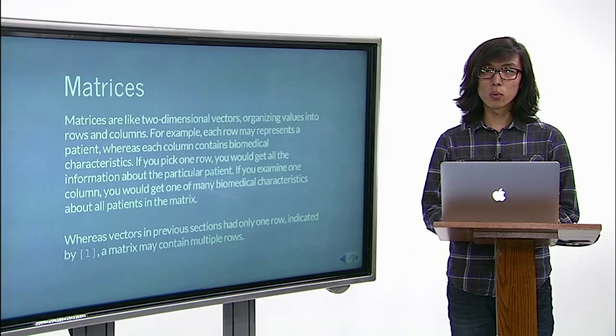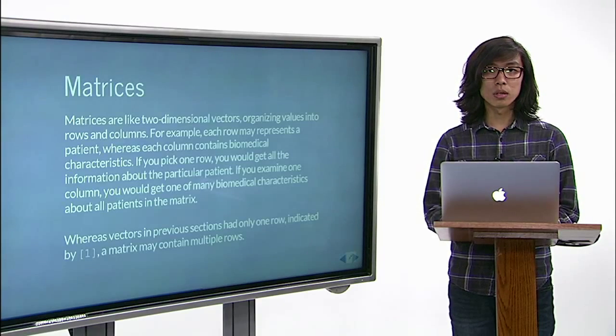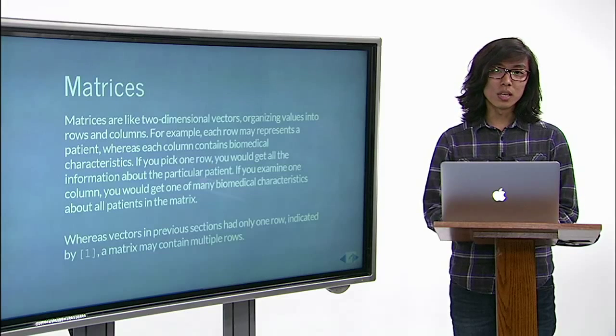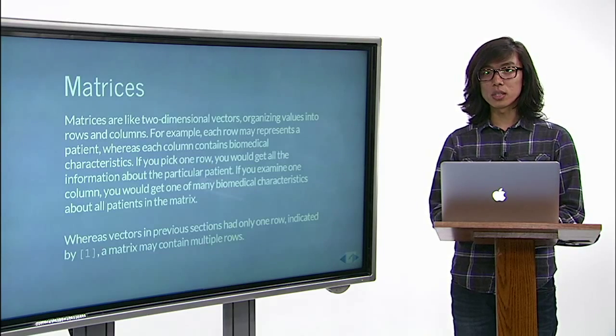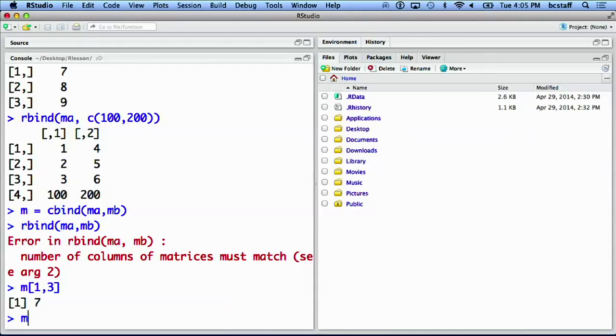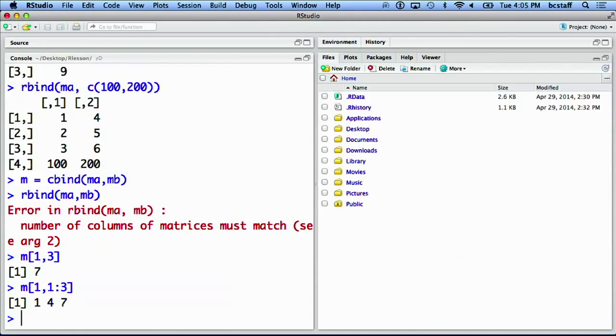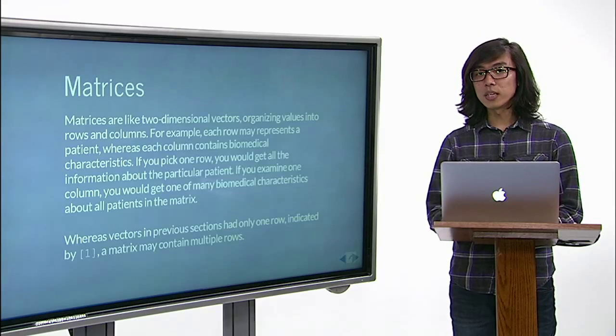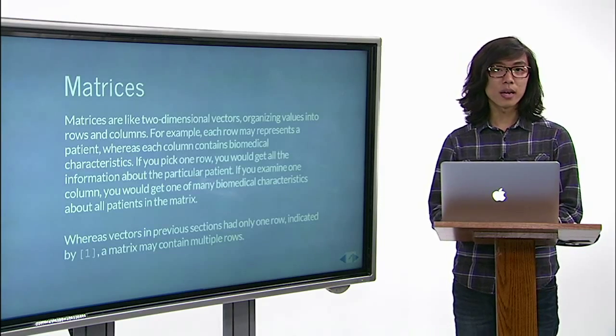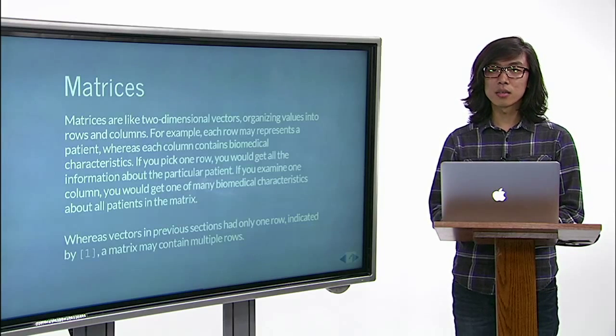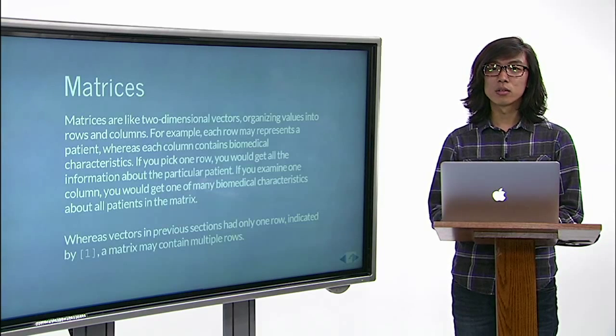We can also use a sequence of numbers generated with the colon operator within square brackets. Here, I would like to know the values in the first row. Leaving the row spot or the column spot empty will extract, respectively, an entire column or an entire row.